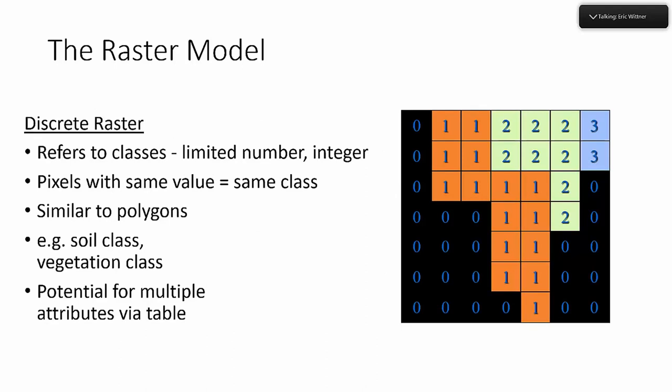Discrete rasters refer to rasters with classes — a limited number of values, usually integers. Pixels with the same value represent the same class. They're very similar to polygons except edges are always square — you can't have angled edges when dealing with a raster. Commonly used for soil classification and vegetation classification, often derived from sampled or sensed sources. There's also the possibility of having multiple attributes per cell, stored on different bands. You can flip between bands to see the different data stored, such as a soil class and vegetation class in one raster.